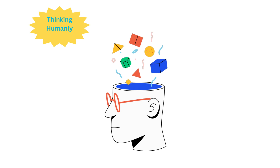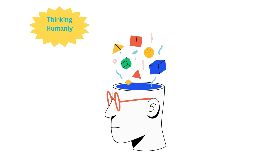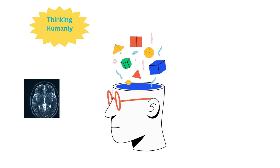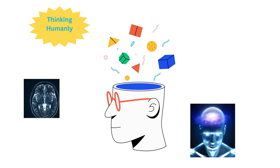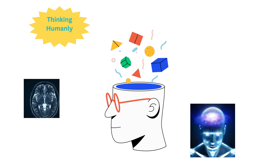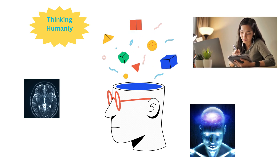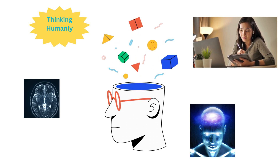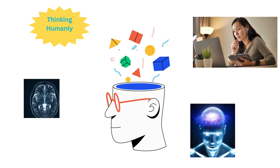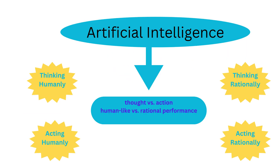The first pillar, thinking humanly, delves into the cognitive processes that characterize human thought. This approach uses tools like brain imaging and psychological experiments to model how we think, make decisions, and learn. It's about creating systems that not only act intelligently, but also embody the complexities of human cognition, offering insights into our own minds.